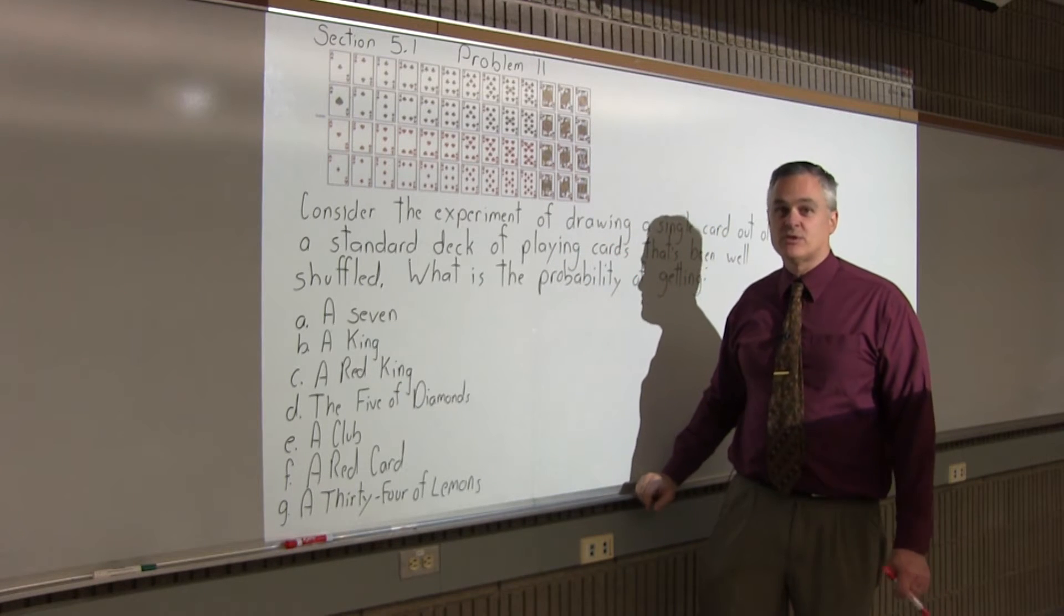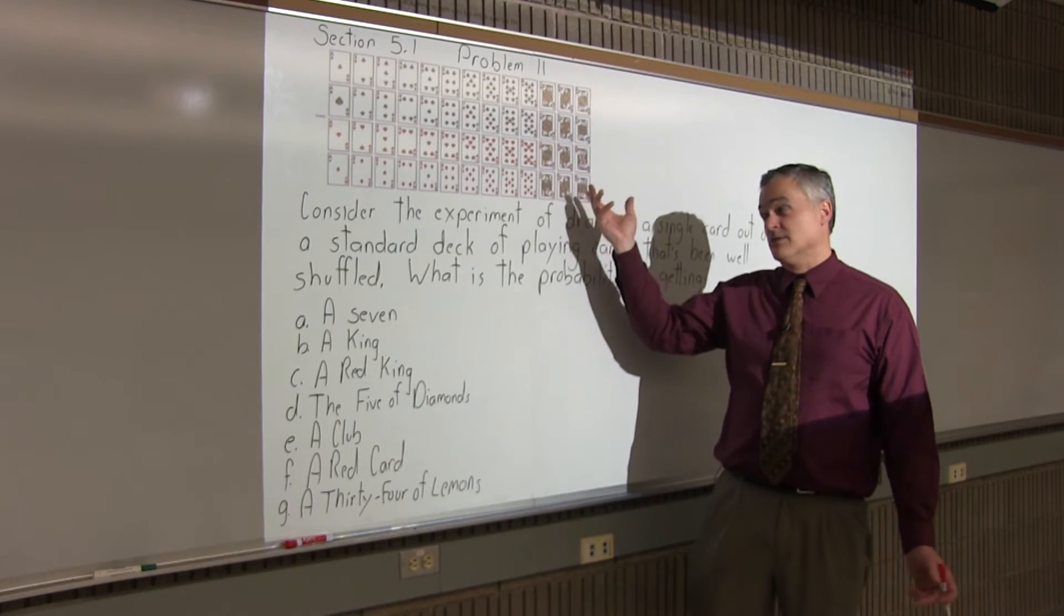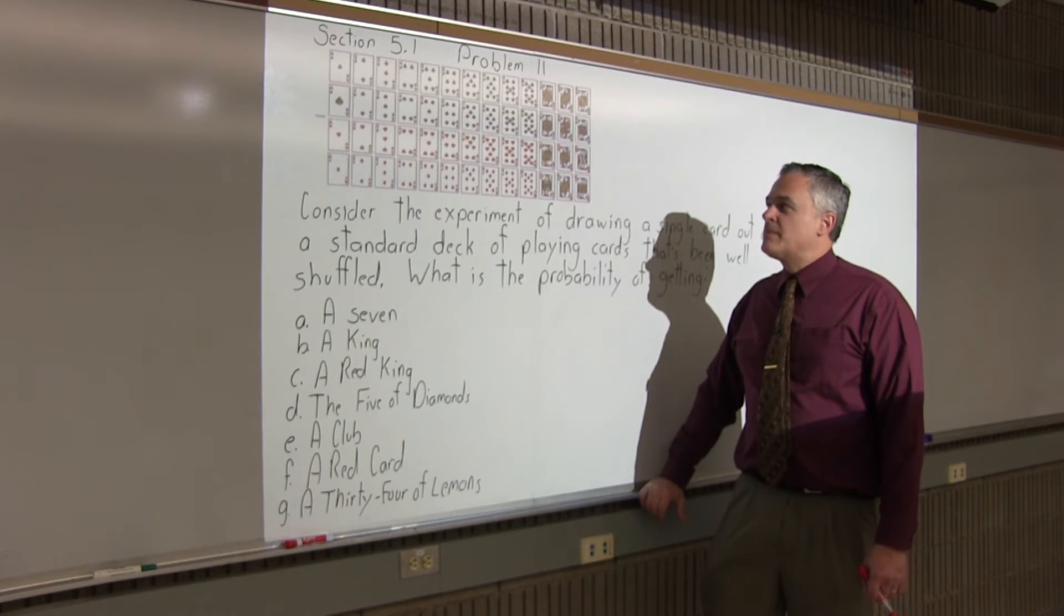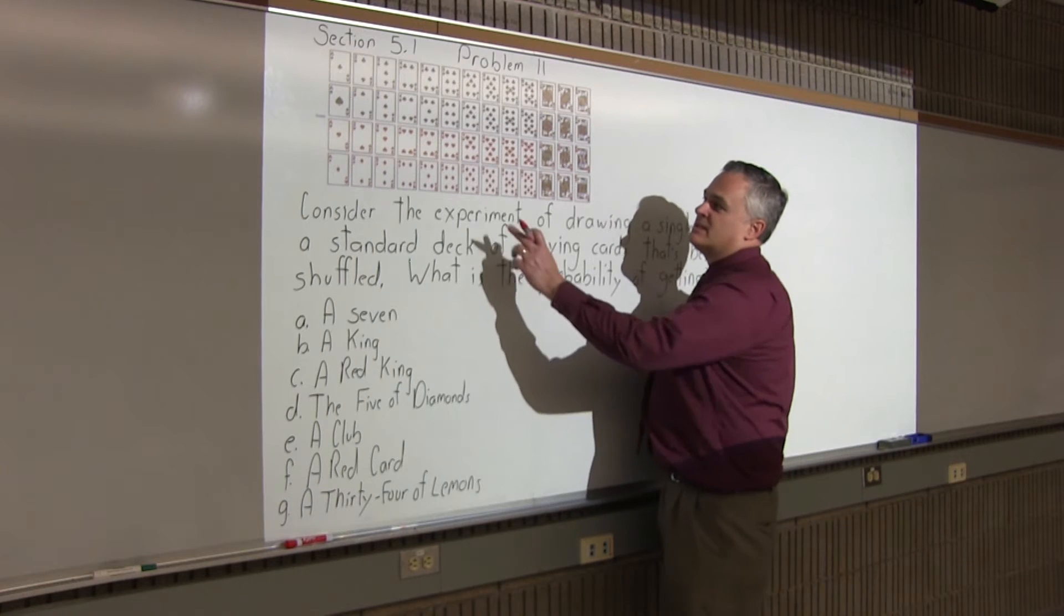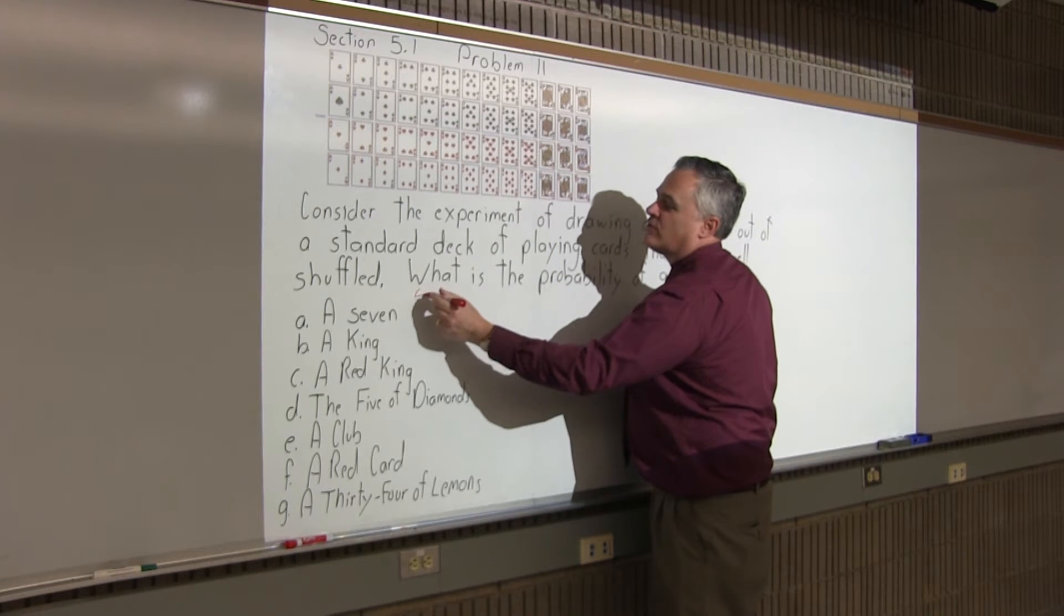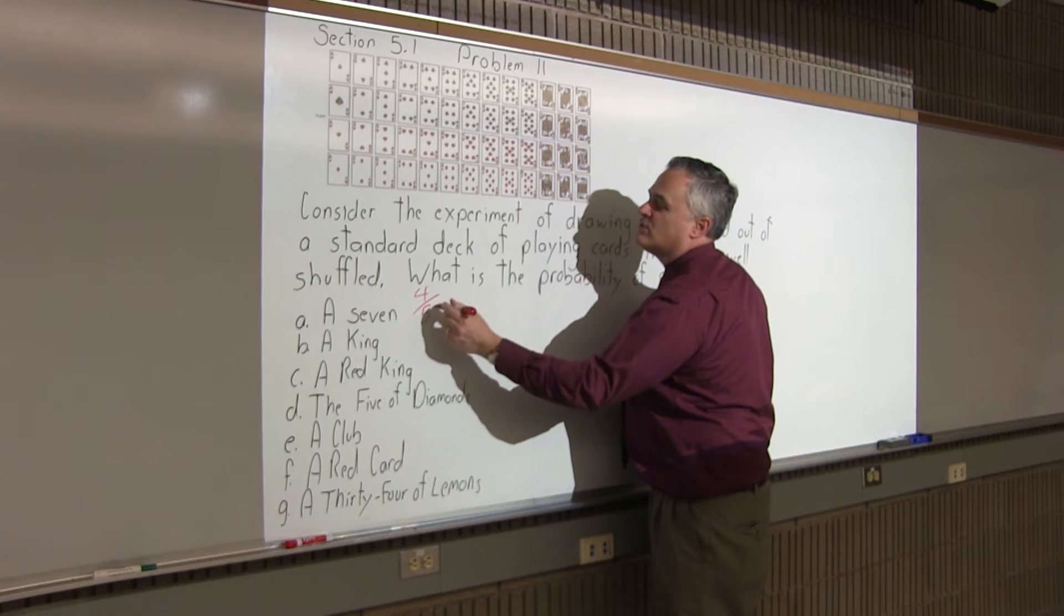You multiply 4 times 13, you get 52. Or you could individually count them and get 52 also. So, there are four 7s: seven of diamonds, seven of hearts, seven of spades, seven of clubs. So there's a total of four 7s out of 52 cards altogether.